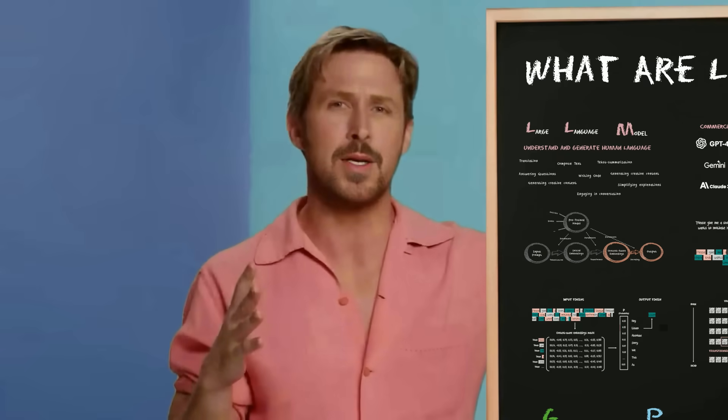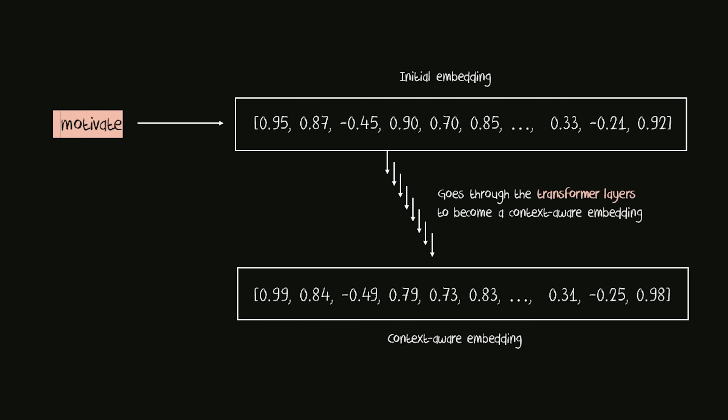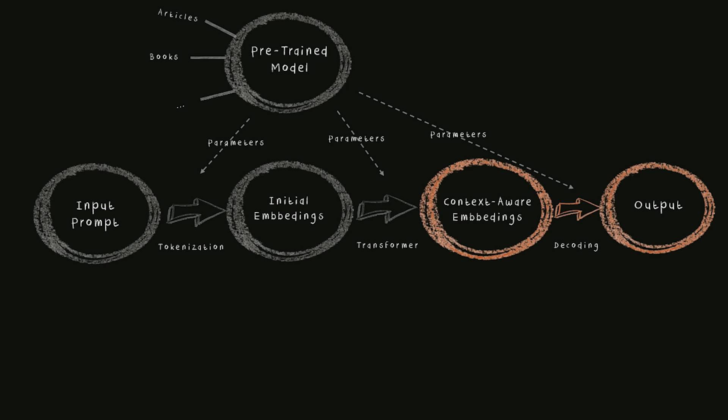Now we have arrived at a crucial step in the process — one that really revolutionized how LLMs work: the transformation of the initial embeddings into context-aware embeddings through what is called a self-attention mechanism. Through this step, the model identifies the most important words and nuances in the input prompt needed to generate the most relevant output. Although the word 'motivate' might start with an initial embedding that is always the same, it might have slightly different meanings and importance in a different context. By moving the input embeddings through different transformer layers and applying a self-attention mechanism, the embeddings get fine-tuned to the context and the importance of each word is calculated, transforming the initial embedding into a context-aware embedding. Once we have our context-aware embedding for each token, it's time to decode all context-aware embeddings into an output.